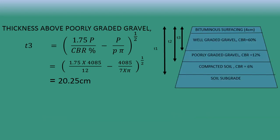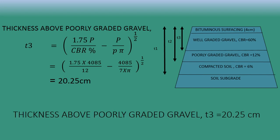Next, we find T3, the thickness above the poorly graded gravel layer, for which the CBR value is 12%. Substituting all the values into the formula, after calculation we get T3 = 20.25 cm. Therefore, the thickness above the poorly graded gravel is 20.25 centimeters.